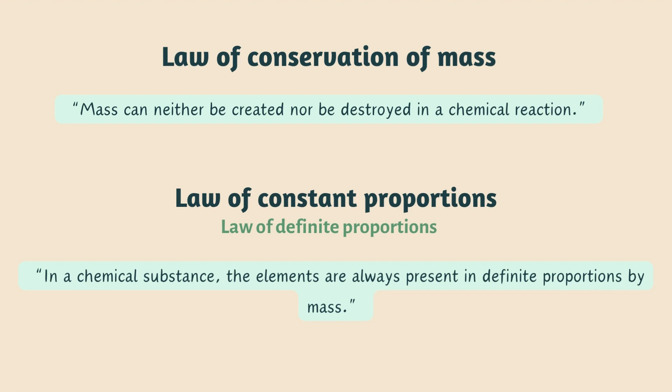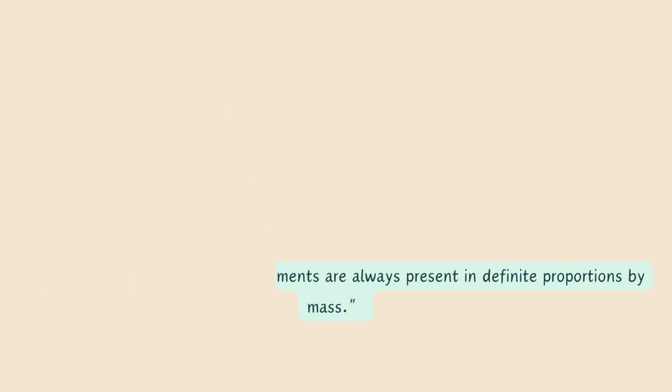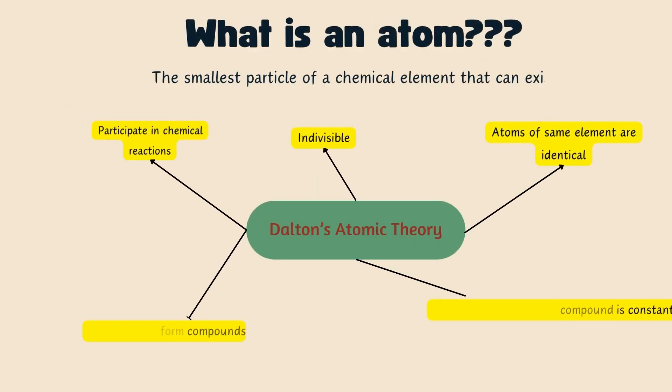So what is an atom? It is the smallest particle of a chemical element that can exist. The definition and properties of an atom is described using Dalton's atomic theory. This theory is derived from the law of chemical combination. According to this theory, all matter, whether it is an element, a compound or a mixture, is composed of small particles called atoms. These atoms are the ones which participate in chemical reactions.